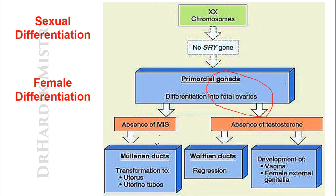Due to the absence of MIS (Müllerian Inhibiting Substance), the Müllerian duct transforms into the uterus and uterine tubes. Due to the absence of testosterone, the Wolffian duct regresses. As a result, there is development of the vagina and female external genitalia. That is how female differentiation takes place.